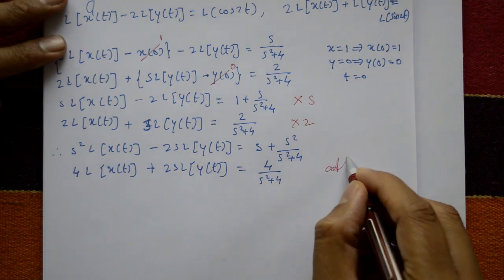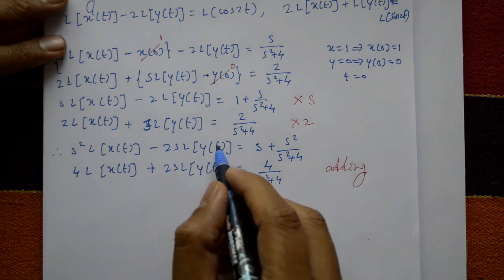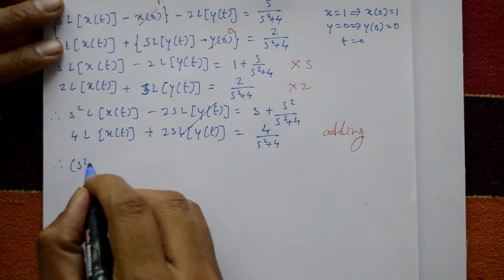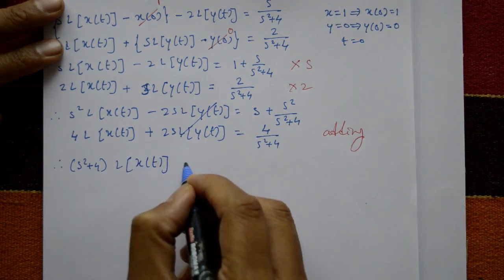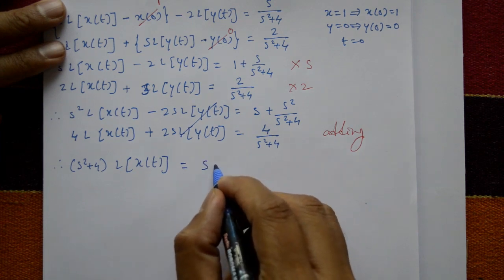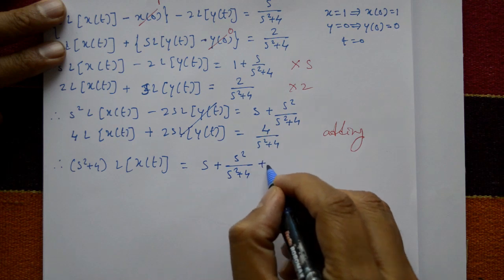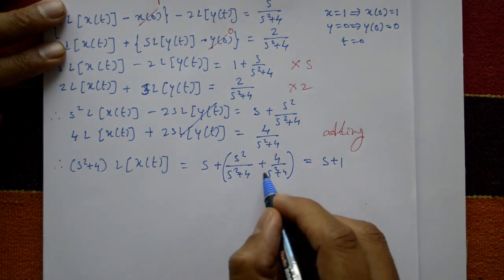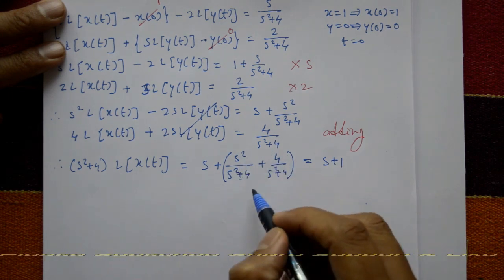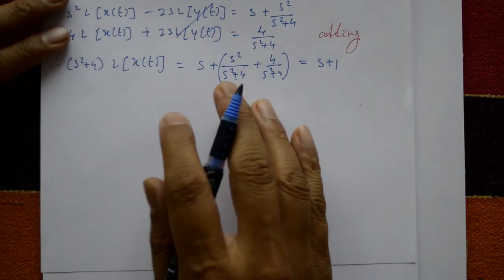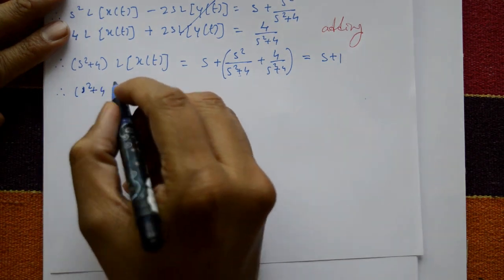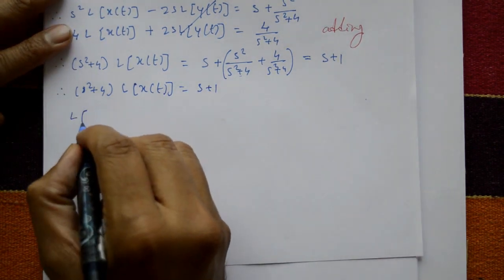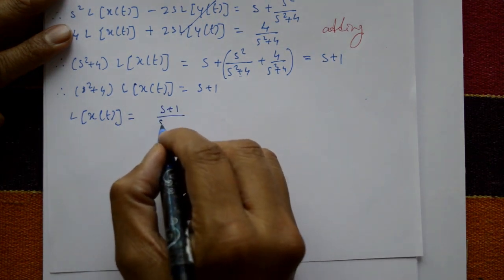Adding the two equations cancels the L{y(t)} terms. The result is (s²+4)·L{x(t)} equals s plus s²/(s²+4) plus 4/(s²+4). Simplifying the right side, the (s²+4) terms cancel, giving (s²+4)·L{x(t)} equals s+1, so L{x(t)} equals (s+1)/(s²+4).